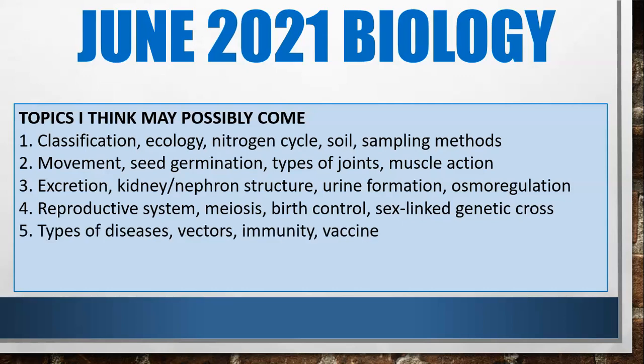For the fifth question, something about diseases — maybe different categories of diseases, vectors. I haven't seen a question on the life cycle of mosquitoes or house flies in a bit. And immunity or vaccines — keeping current with the whole vaccine discussion and maybe COVID. Something related to immunity as well.